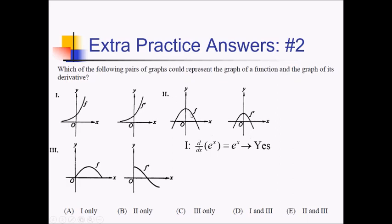Looking at the second pair: we have a turnaround, a max, at x equals 0. So we ought to have f prime of 0 that is also 0 — f prime should equal 0 at this spot. But looking at the f prime graph, f prime is positive where it should be 0. Because of that, we're going to eliminate this one from consideration.